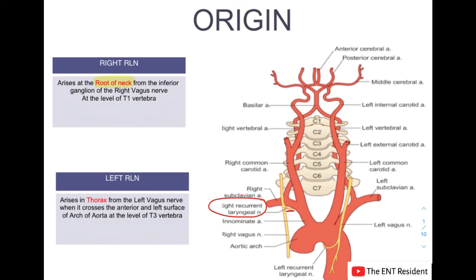On the left side, it arises in the thorax from the left vagus nerve when it crosses the anterior and left surface of the arch of the aorta at the level of T3 vertebra. In the picture you can see the left recurrent laryngeal nerve arising from the vagus nerve in front of the arch of aorta at T3.